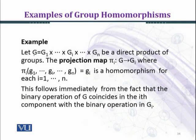Now let's consider an example. Let G be the direct product of the groups G₁ × ... × Gᵢ × ... × Gₙ. The projection map πᵢ is defined by πᵢ from G to Gᵢ, given by πᵢ(g₁, ..., gᵢ, ..., gₙ) equals gᵢ.